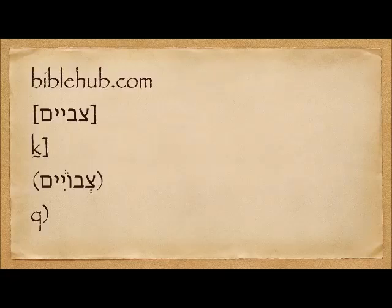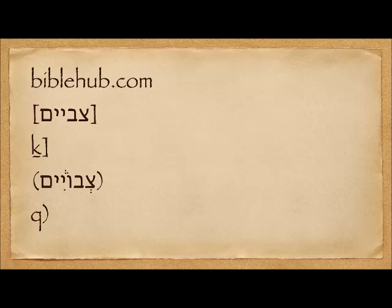If you look at the grid on BibleHub.com — all on the same verse, Genesis 14:2 — you will see the Ketiv with no vowels and then the letter K telling you it's the Ketiv, what is written. Then it gives you the Kri with a Q to tell you this is what you read, along with the vowelized form.